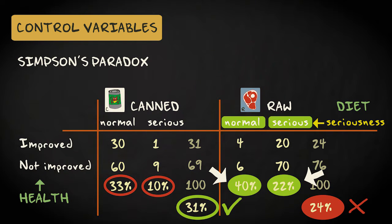The relation reverses, the raw diet suddenly outperforms the canned food diet, for not just one but for both levels of the control variable, once the control variable is taken into account.